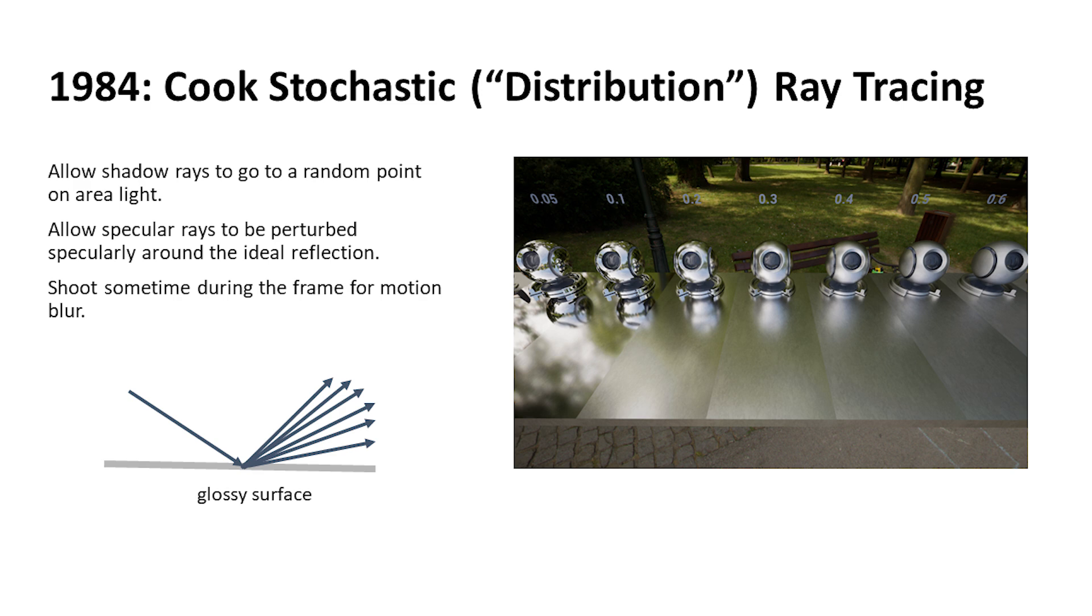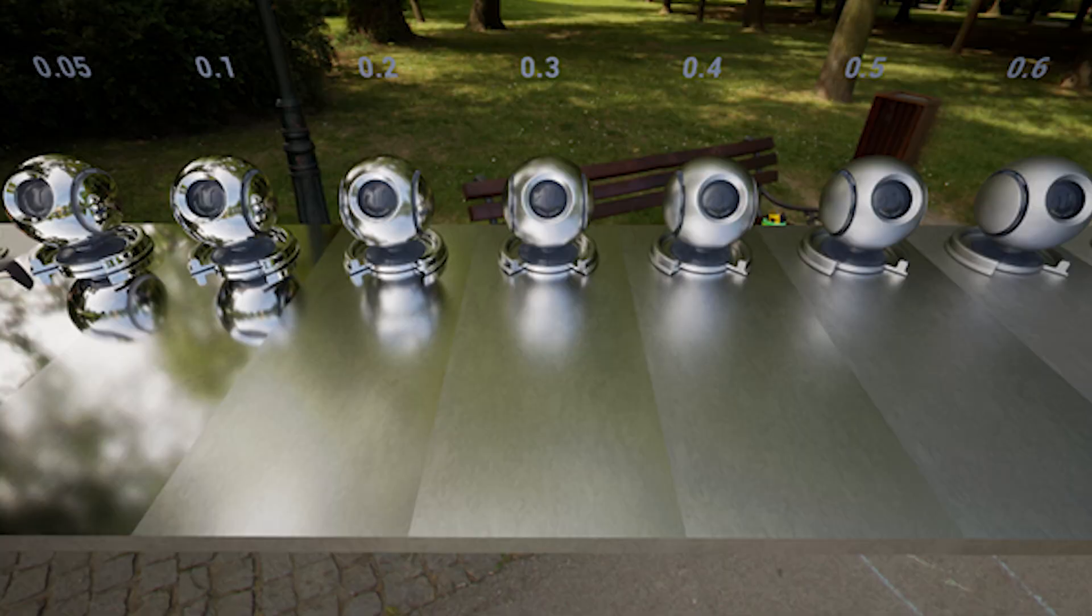The next breakthrough is the Cook stochastic, sometimes called distribution ray tracing, in 1984. The idea here is that instead of shooting just a single reflection ray, for example, you might have a glossy surface, something with kind of a sheen, and you shoot out a burst of rays instead. You can also get cool effects like motion blur.